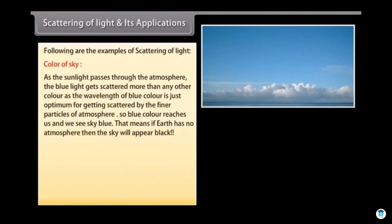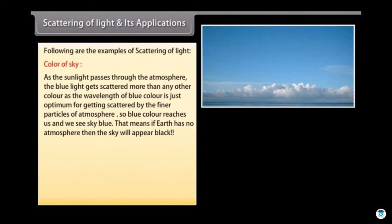Following are the examples of scattering of light. As the sunlight passes through the atmosphere, the blue light gets scattered more than any other color as the wavelength of blue color is just optimum for getting scattered by the finer particles of atmosphere. So blue color reaches us and we see sky blue. That means if earth has no atmosphere, then the sky will appear black.